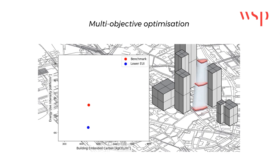Typically in a linear design, only a handful of options can be assessed. The first option considers a design with lower energy relative to the benchmark. The second option considers a design with lower building embodied carbon relative to the benchmark. However, this approach still falls short in fully exploring the design space, providing a limited perspective on the design possibilities.